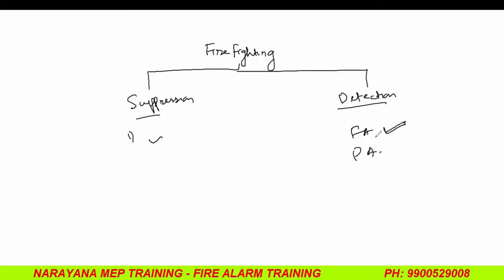Today, we are discussing about the fire alarm. Basically, what is the use of a fire alarm? Before the fire starts — before the actual fire comes to a bigger version, before the intensity increases — it will activate and give the alarm. Basically, it is used to give a warning to the building occupants.